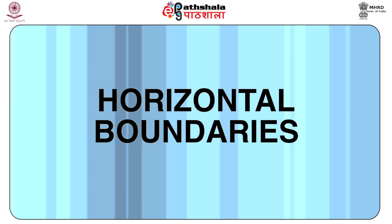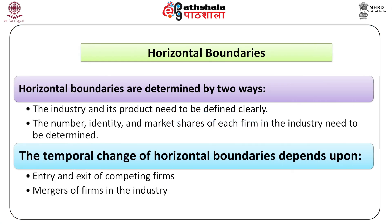Horizontal boundaries of a firm are demarcated by its direct competitors — firms that produce a similar kind of product. Horizontal boundaries are determined in two ways: first, the industry and its product need to be defined clearly; second, the number, identity, and market shares of each firm in the industry need to be determined. To identify horizontal boundaries, one can prepare a list of competitors in the industry. Horizontal boundaries may change over time depending on entry and exit of competing firms.